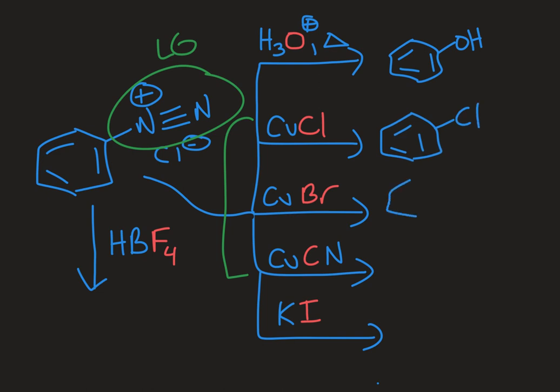With the copper bromide I would get bromobenzene. With the copper cyanide I would get cyanobenzene. So remember that's a triple bond between carbon and nitrogen.